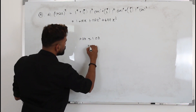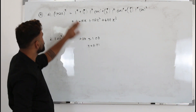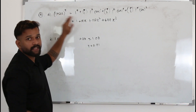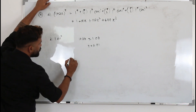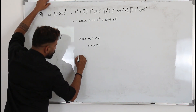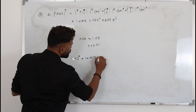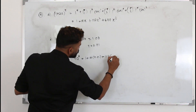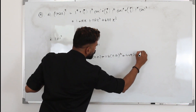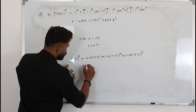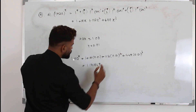For Part B, set 1 + 2x equal to the target value. Solving gives x = 0.01. Substitute x = 0.01 on both sides. The left side becomes 1.02⁸. On the right, substitute into 1 + 16(0.01) + 112(0.01)² + 448(0.01)³ to get the approximation 1.171648.